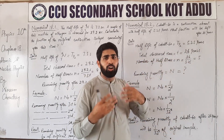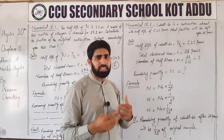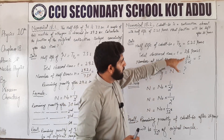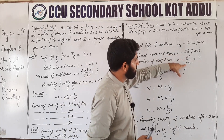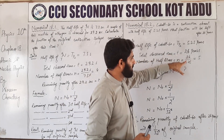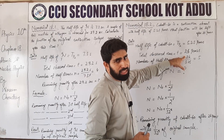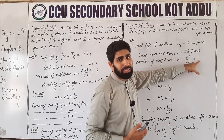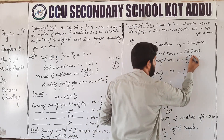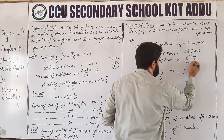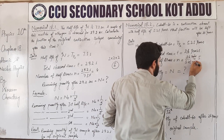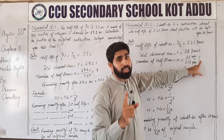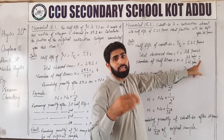Number of half lives = total observed time ÷ half life of Cobalt = 26 ÷ 5.25 ≈ 5 periods۔ اوپر بھی years تھا نیچے بھی years تھا — دونوں cancel ہو جائیں گے — اس کے ساتھ کوئی unit نہیں آئے گا، یہ صرف half lives کی تعداد ہے۔